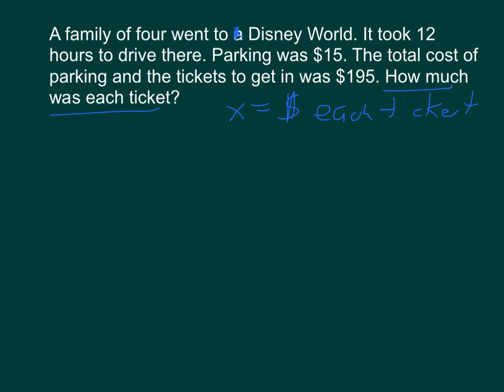What other information is here? A family of four. There's four people, so they probably bought four tickets. It's in words, but it's still important. It took 12 hours to drive there. Well, it doesn't ask us for taxi fare or gas or anything, so we don't need that information. Parking was $15. The total cost of parking and the tickets was $195. So basically, parking plus the tickets equals $195. Parking was $15, and we need to add that to the total cost of tickets.